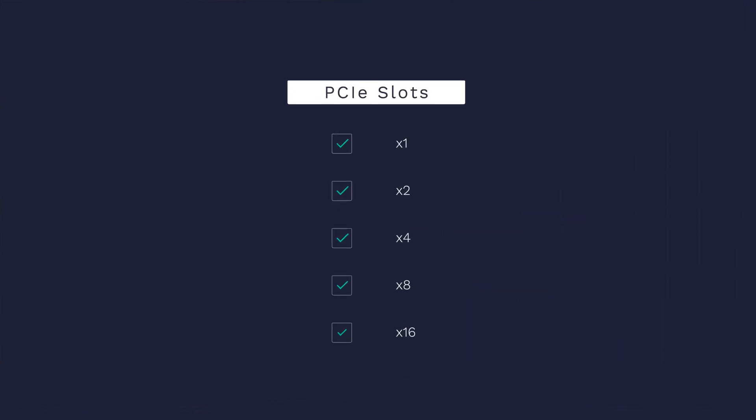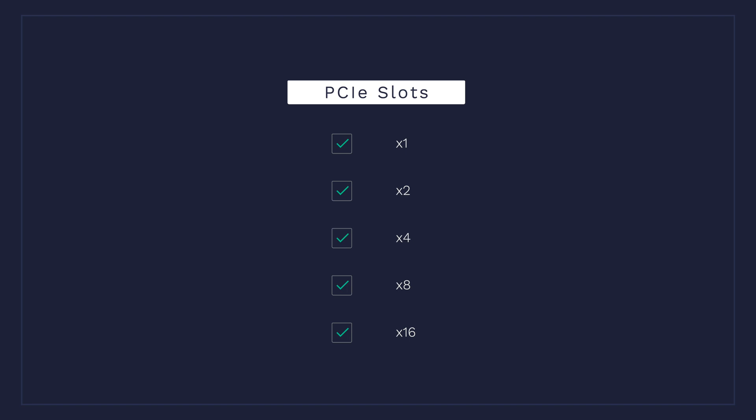The USB interface is easier to use and obviously is more accessible. Meanwhile, the PCIe slots offer really high data transmission rates that are just not possible on a USB port. PCIe comes in a bunch of different physical configurations: X1, X2, X4, X8, and X16 being the most popular.